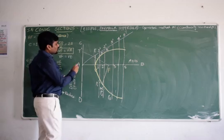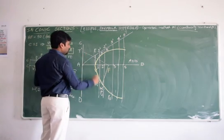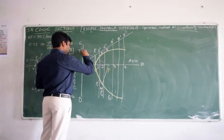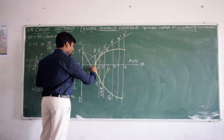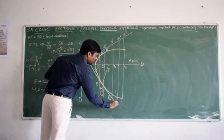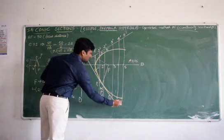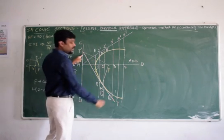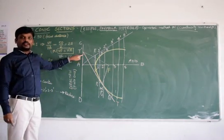Now join G to M, join G to M and extending it bit further. We will get a line that is nothing but tangent line. This is a tangent line.